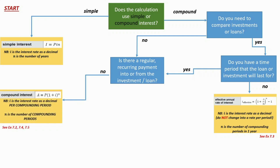You'll notice on this PowerPoint I've got some references like CEX 7.2, which maps these formulas to questions in the Jacaranda textbook. If you're not using Jacaranda, you might want to delete that and map it to your own textbook. In the compound interest formula, you do need to change the interest rate to a rate per compounding period — unlike simple interest and the effective interest rate formula. N is the total number of compounding periods, not just in one year, so that's the number of years multiplied by the compounding periods per year.